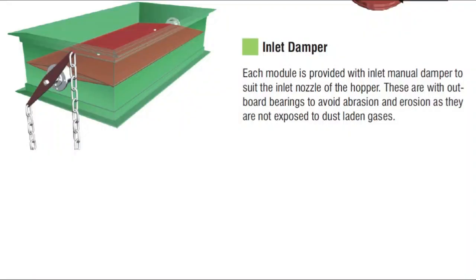Each module is provided with an inlet manual damper to shut the inlet nozzle of the hopper. The outlet damper bearings are located outside the equipment to avoid abrasion and erosion, as they are not exposed to the dust-laden gases. Since the bearings are outside, we only need to take care of the inside damper. If hard-facing is done on it, wear will be reduced.